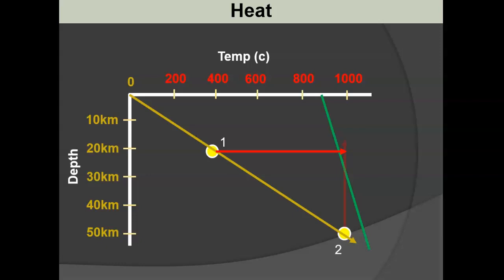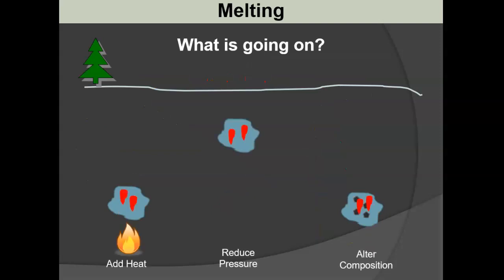At greater depths, instead of adding heat, we could decrease pressure by moving the rock upward to a shallower depth where the melting temperature is lower, and that would cause it to melt. The last mechanism: when water is dissolved in magma, the more water present the lower the melting temperature. Introducing water into rock at depth changes its composition and can cause melting without any movement. These are the three mechanisms: alter composition, reduce pressure, or add heat.